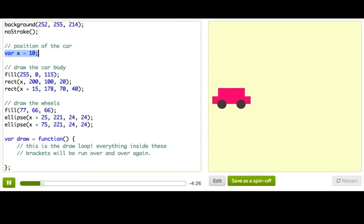Then here, we're making a new variable x, the position of the car, and giving it a value of 10. You can see if we change this value, then it moves the car back and forth. Bring it back to 10, and then over here, we're setting the fill color of the car and drawing two rectangles for the car body. This first rectangle is for the bottom, and this rectangle is for the top.